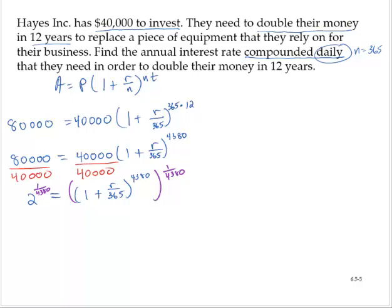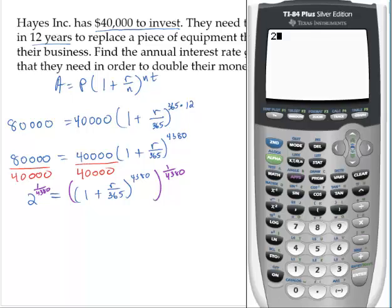We definitely need the calculator for this part. And 2 raised to the quantity 1 divided by 4,380. Close it off. Hit Enter. So we get a number very close to 1, 1.000158265.